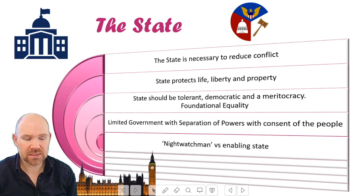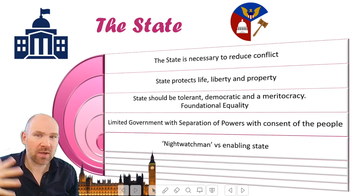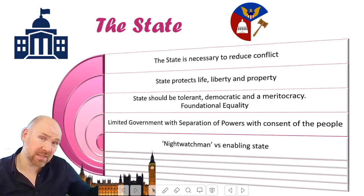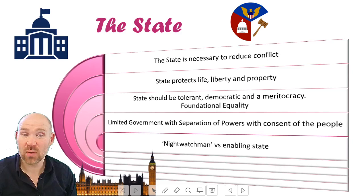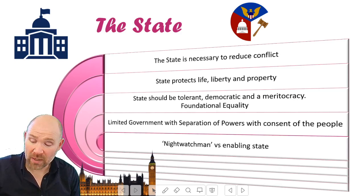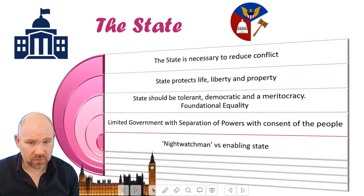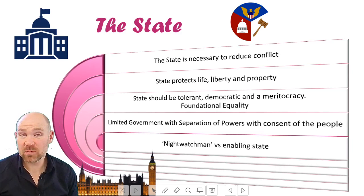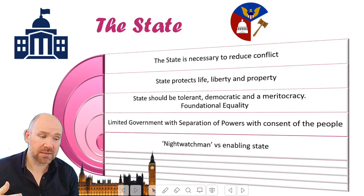Classic liberals see the state as small — it's there as what they might call a night watchman, just to be there when things go wrong, to protect us. The night watchman analogy means that when you go to bed at night, the night watchman is there just to make sure everything's okay. Classic liberals see the state as basically there to protect us, guard us, and make sure our rights are not infringed by others. But modern liberals see the state as actually being a tool to help us fulfill our potential and have maximum opportunities to be the best we can within a meritocracy.